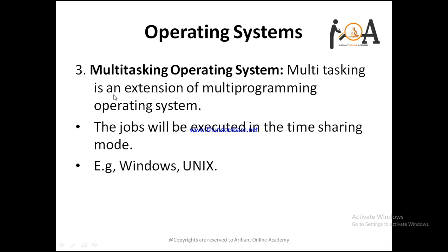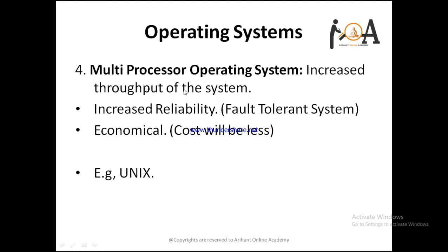The multitasking operating system is an extension of the multi-programming operating system. Jobs are executed in time-sharing mode — for example, job 1 gets 1 second, then job 2 gets 1 second, then job 3, and so on in rotation. Windows and Unix are also types of multitasking operating systems depending on the processor type.